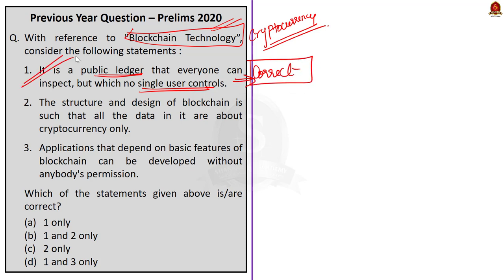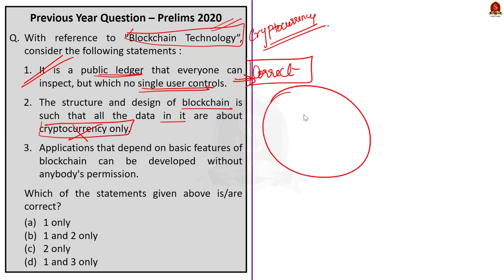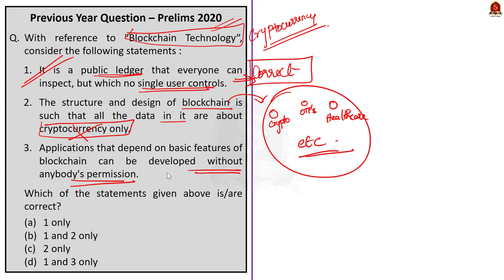The second statement says the structure and design of blockchain is such that all the data in it is about cryptocurrency only — this is absolutely incorrect. Blockchain technology is a very big circle in which cryptocurrency is one part; it has many other data such as OTPs, healthcare details, etc. The third statement says applications that depend on the basic feature of blockchain can be developed without anybody's permission. Yes, we stressed that without any central authority or government permission, we can go ahead with cryptocurrency, which is a part of blockchain technology. So statement three is correct.